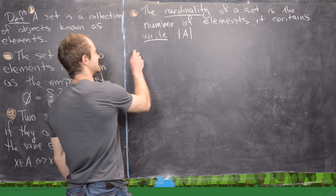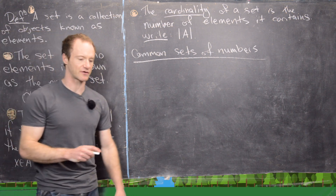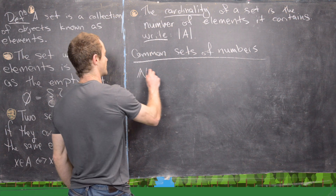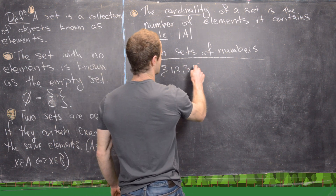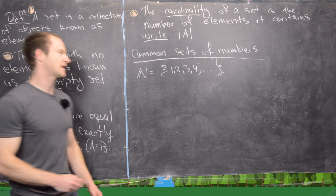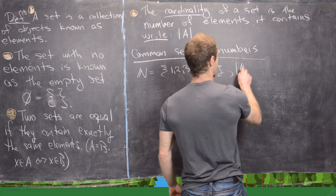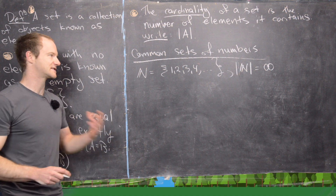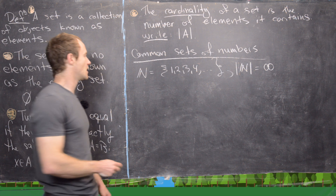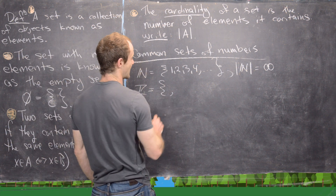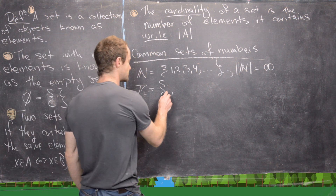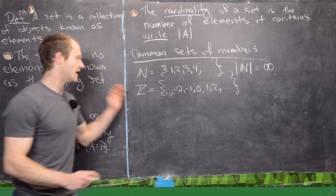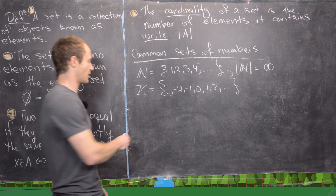Now I want to look at some common sets of numbers that you generally encounter in classes like abstract algebra, real analysis, and topology. The natural numbers are {1, 2, 3, 4, ...} — there are infinitely many elements, so the cardinality is infinite. Next, the integers include all positive and negative natural numbers and zero: {..., -2, -1, 0, 1, 2, ...}. The cardinality of the integers is also infinite.